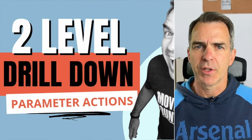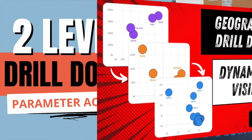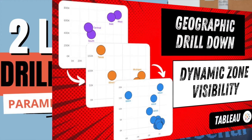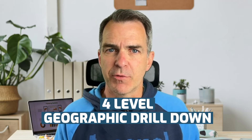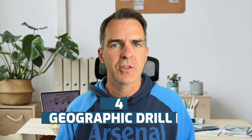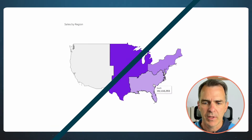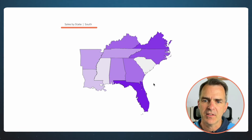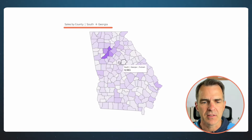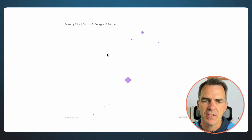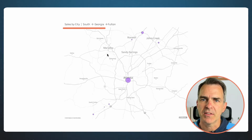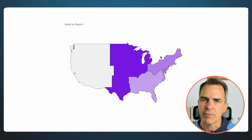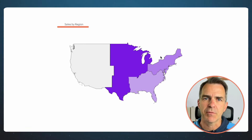You've seen me do a two-level drill down before, and a three-level drill down before. In this video I'm going to show you how to do a four-level geographic drill down. Here's what it's going to look like: we can click on a region and drill down to the states, click on a state and drill down to the counties, click on a county and drill down to the cities, and click on a city and it resets back up to the regions.